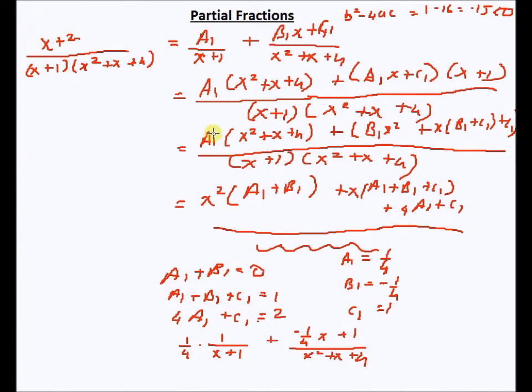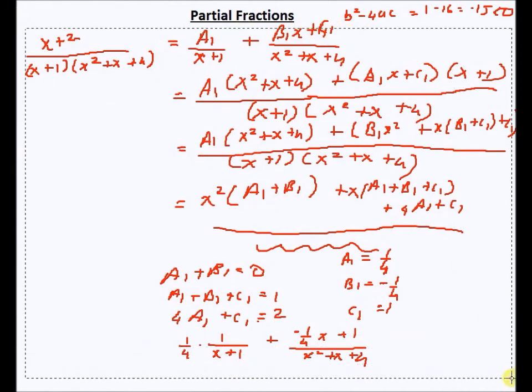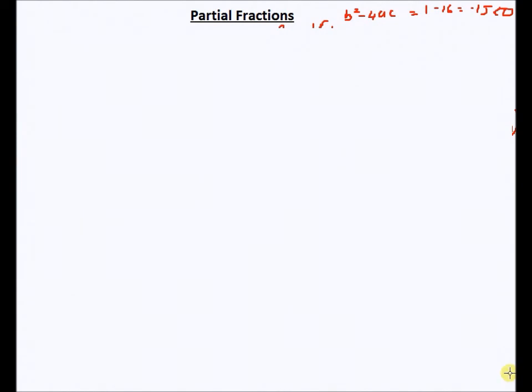Suppose the denominator term were a cubic — I would have b1·x² + c1·x + d in the numerator. You can just go ahead from that same approach. Partial fractions is very simple — you've probably done this already, I just wanted to revise it. If you've done integration, you would have definitely done partial fractions, because that's a very important technique for integrating rational polynomials.